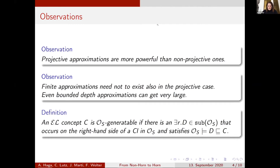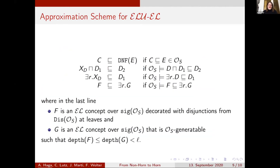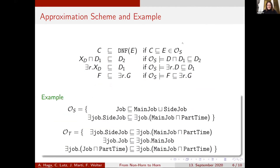On the next slide you will see our ELU-to-EL approximation scheme — please don't try to read the whole slide, I will show you the important parts and explain them with an example. For now, note the second bullet point, which mentions a concept G: G is an EL concept that is OS-generatable, and the depth of F and the depth of G must satisfy the chosen depth bound. Now we can look at what our approximation scheme does with the earlier example.